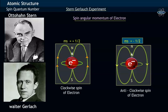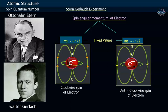Since the spin angular momentum of an electron has got two fixed specific values of plus half and minus half, one may conclude that the spin angular momentum of an electron is quantized.